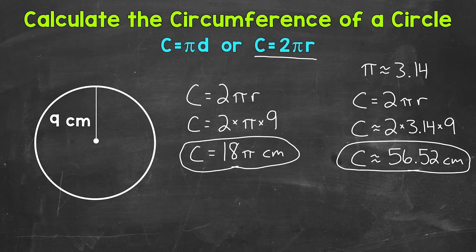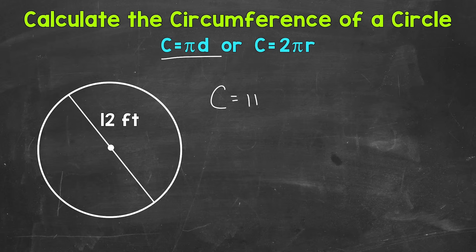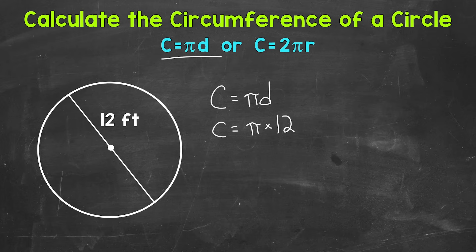That's how we calculate the circumference of a circle given the radius. Now let's move on to finding the circumference given the diameter. For this example, we have a circle with a given diameter of 12 feet. We're going to write out our formula: circumference equals pi d, pi times diameter, since we are given the diameter. Plugging in our diameter: circumference equals pi times 12 feet, which gives us circumference equals 12 pi feet. That's our answer in terms of pi.